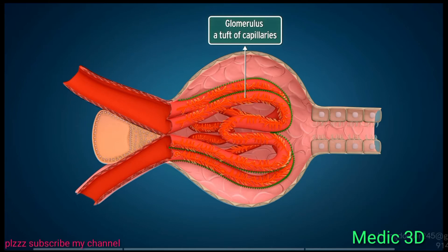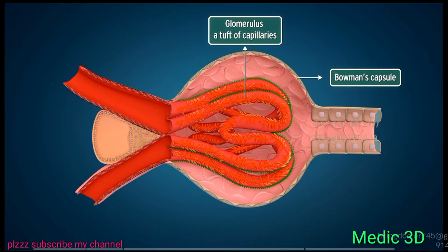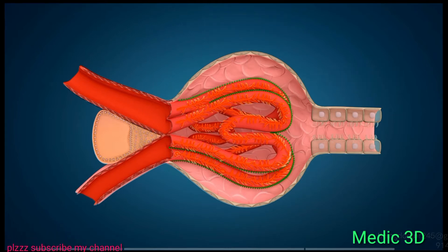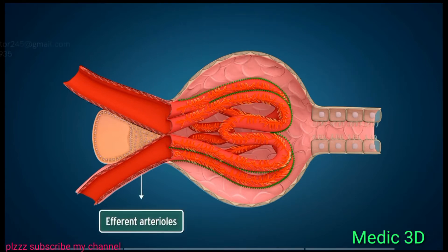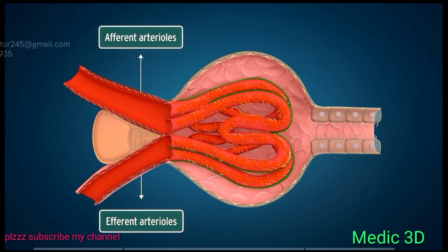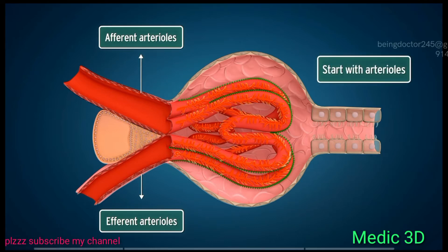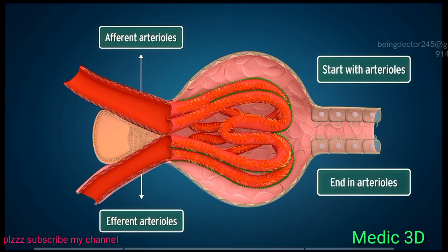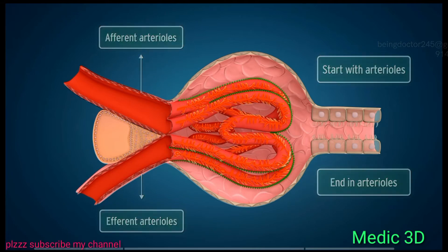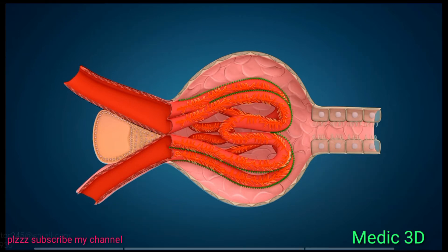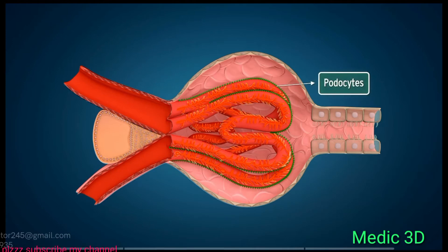The glomerulus is a tuft of capillaries located in the initial dilated cup-like portion of the tubule known as Bowman's capsule. The capillaries originate from afferent arterioles and drain into efferent arterioles. The glomerular capillaries are the only capillaries in the body that start with arterioles and end in arterioles. The capillaries are covered by epithelial cells called podocytes.